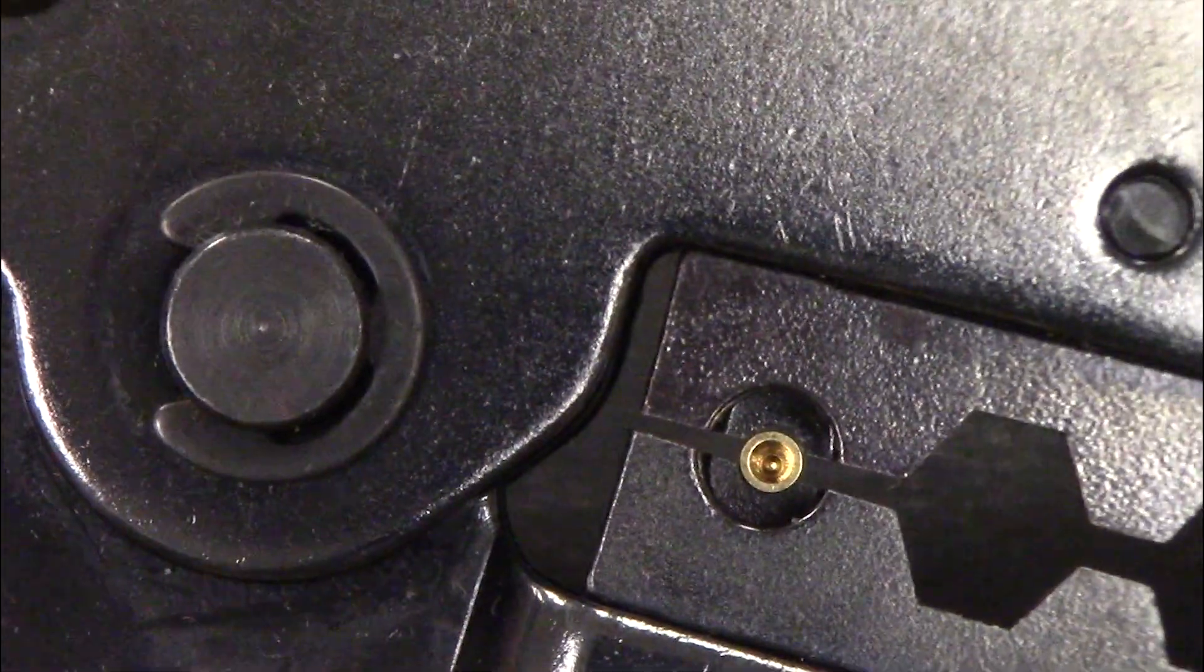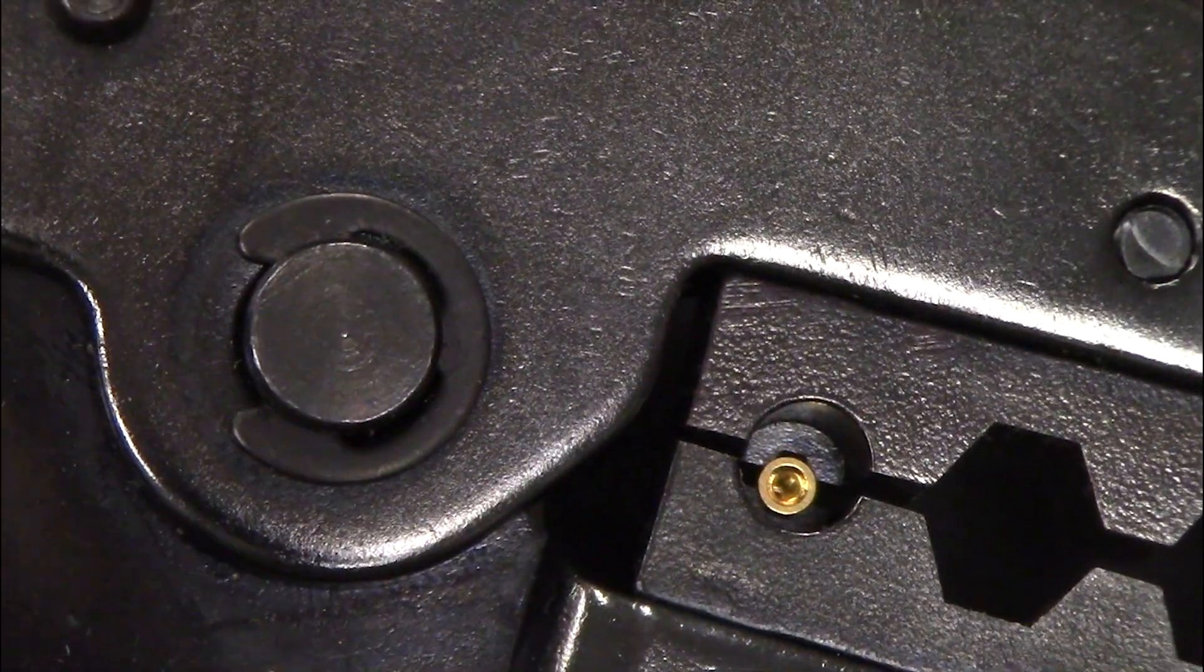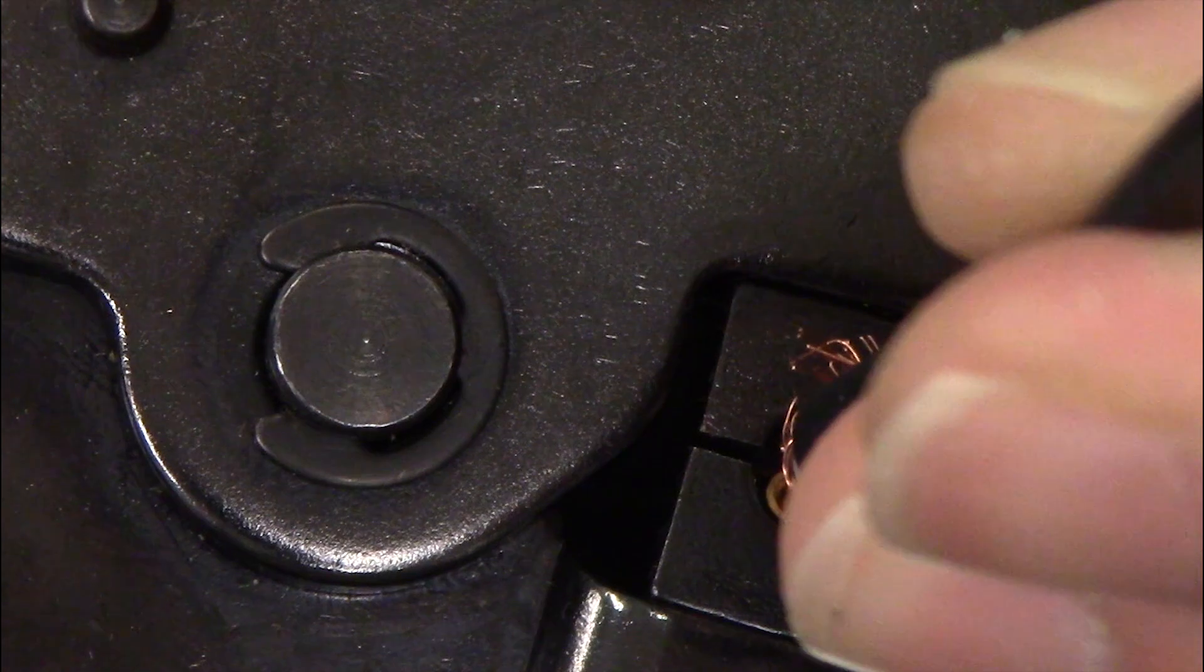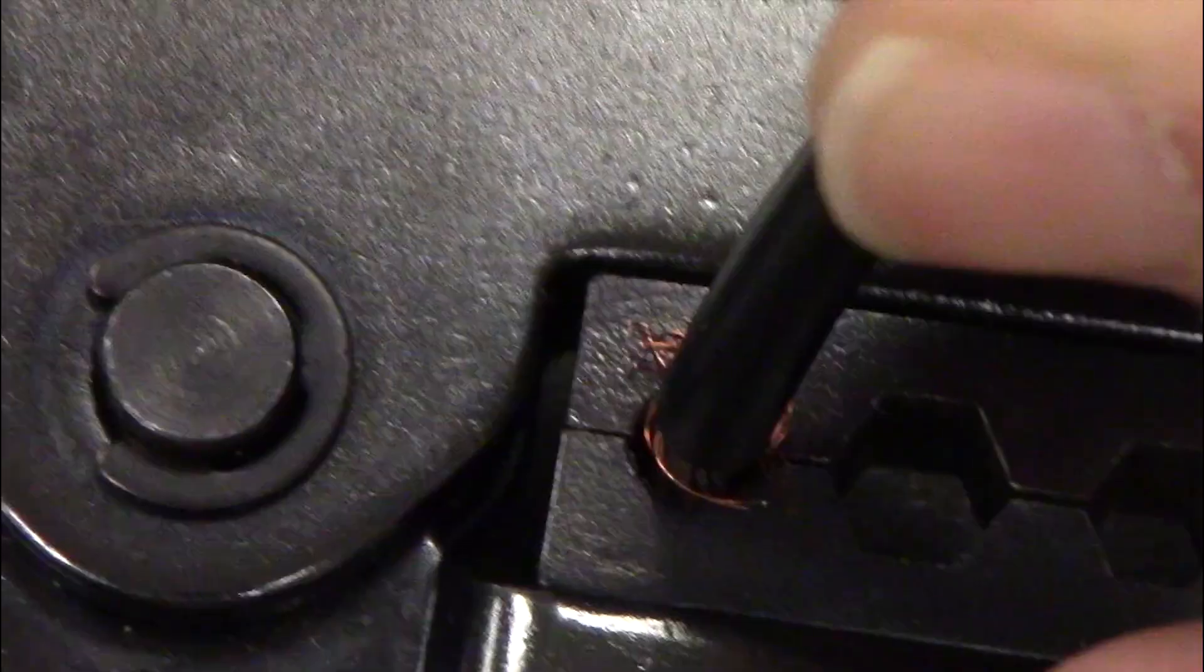Close the tool slightly until the male contact is held in place. Insert the center conductor into the male contact and crimp down. The male contact should be firmly attached now.